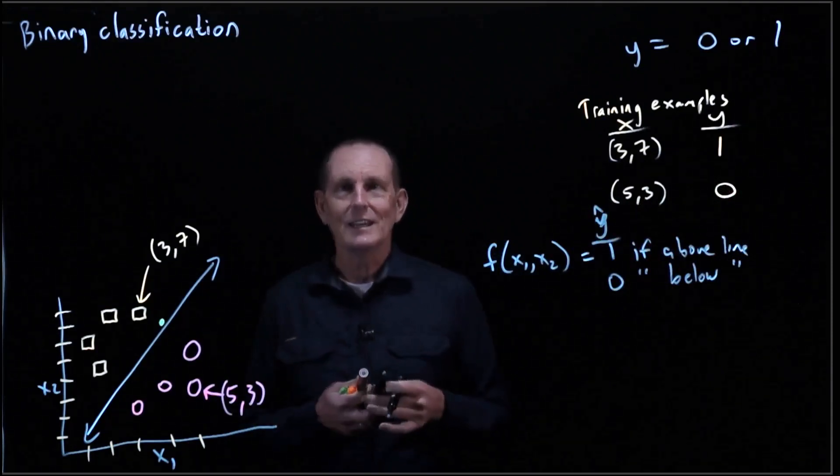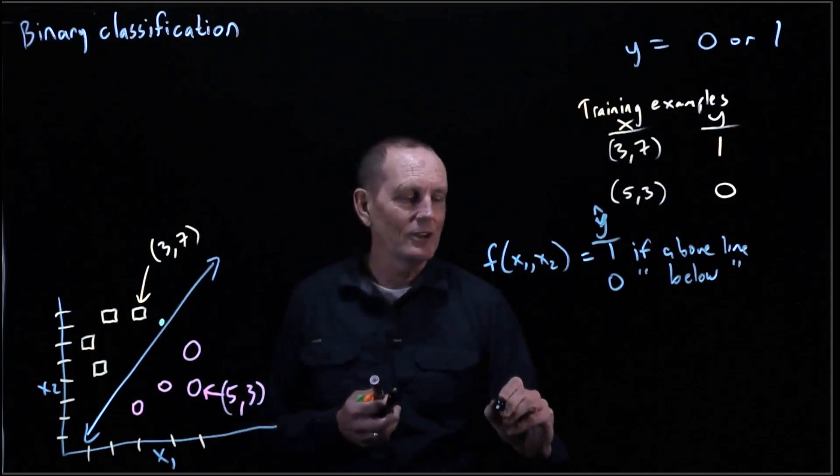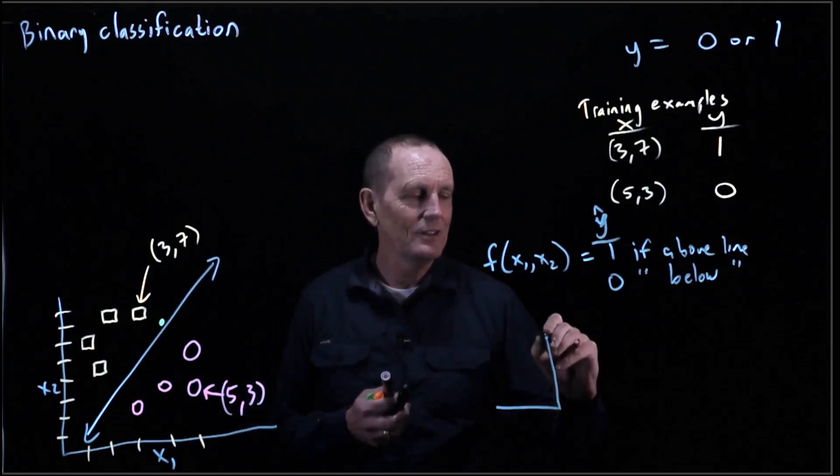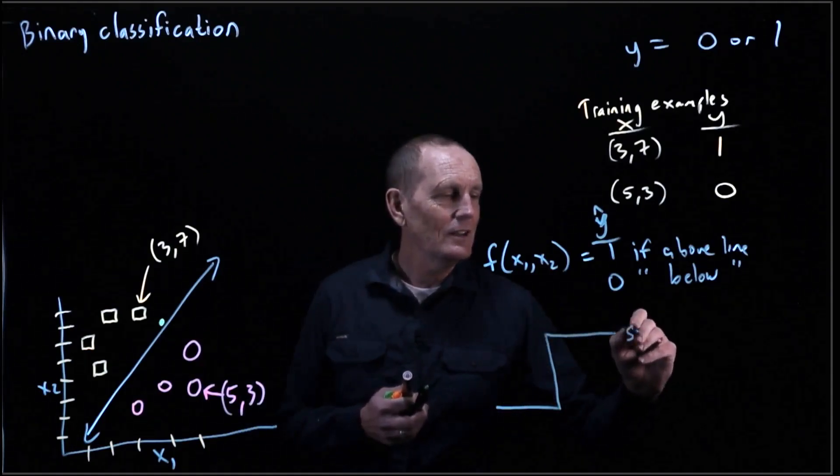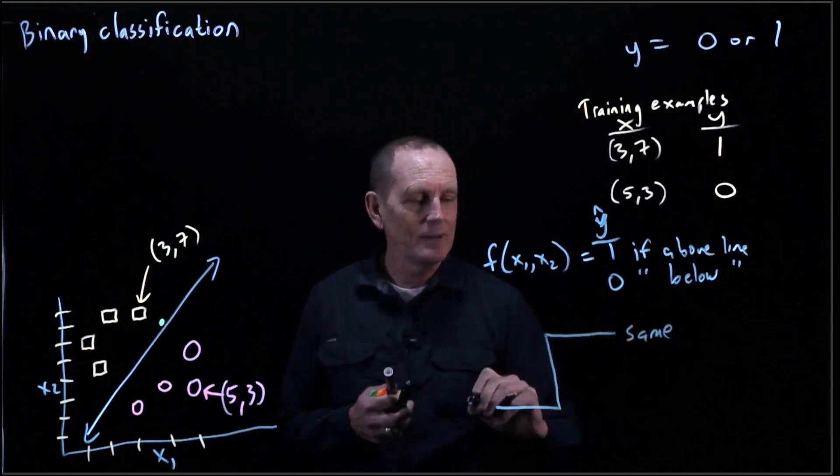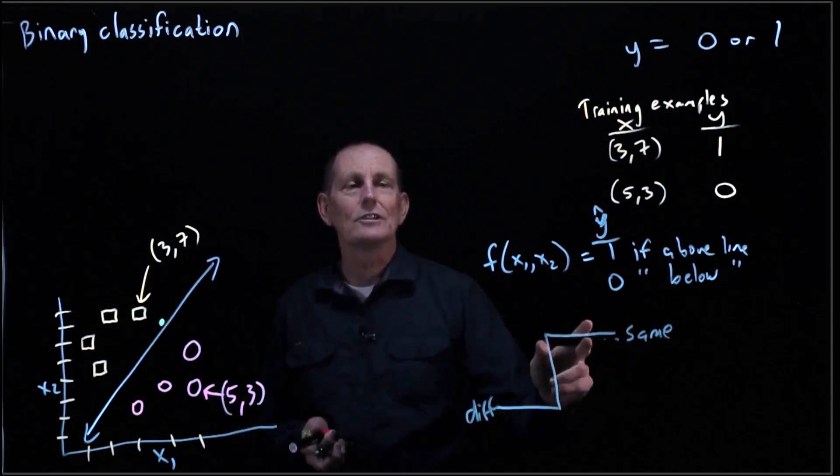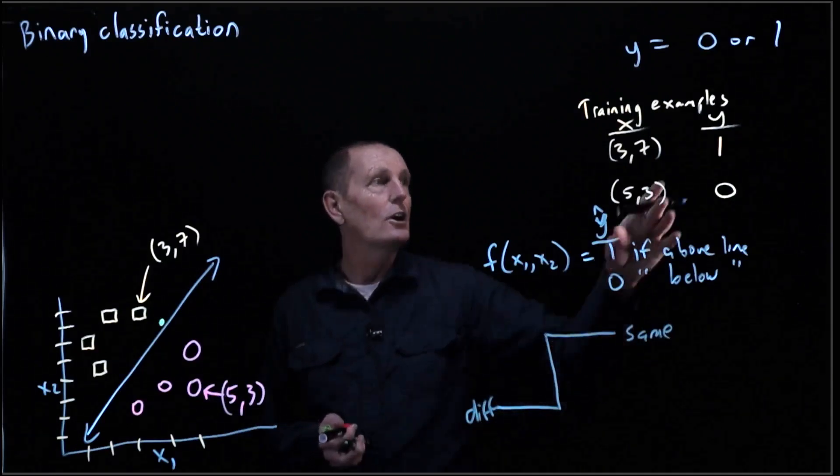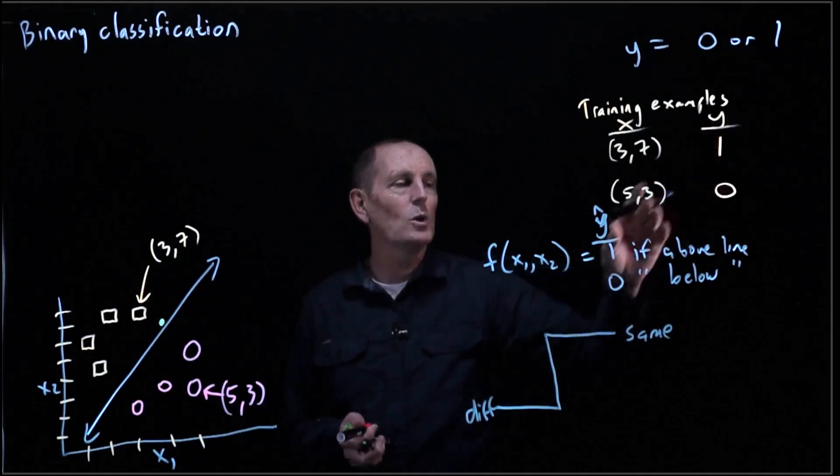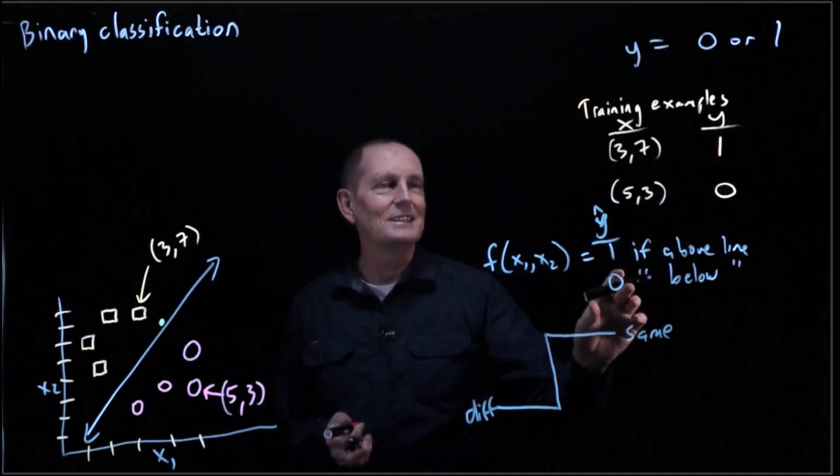So our loss exhibits a cliff-like behavior where if the two values are the same or different. But I don't have any way of saying sort of closer and closer and closer. All I can say is that if my y is 1 and my f is 0,